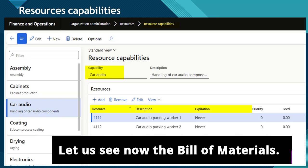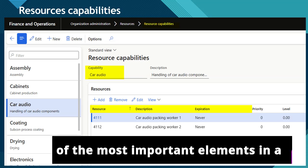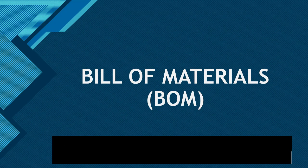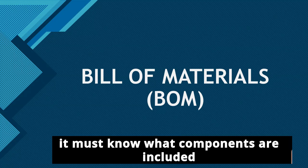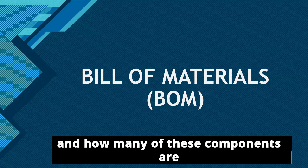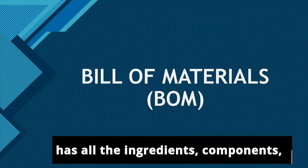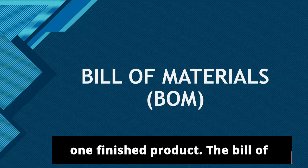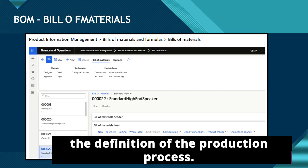Let us see now the Bill of Materials. The Bill of Materials, called BOM, is one of the most important elements in a discrete manufacturing company. Before a company can produce a product, it must know what components are included and how many of these components are needed to make the product. The BOM has all the ingredients, components, parts, or raw materials necessary to make one finished product. The Bill of Materials is one of the cornerstones in the definition of the production process.